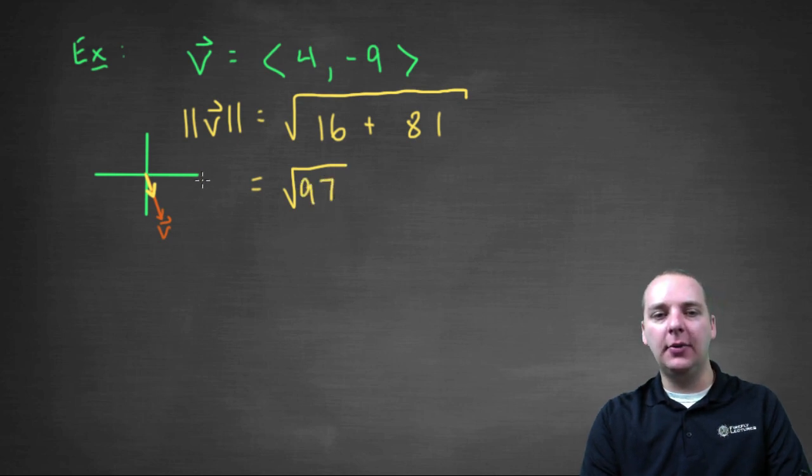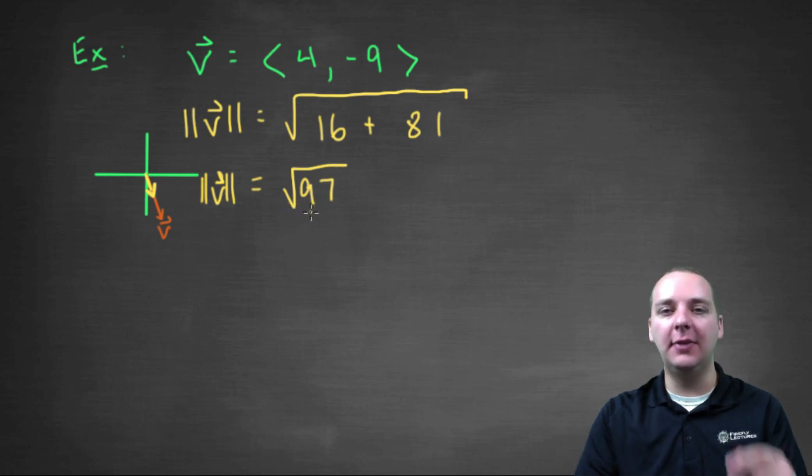And I don't think that really simplifies, so we'll just leave it like that. Okay, and that's the length of V. That's nine point something, that's almost a length of ten. That's way too long.